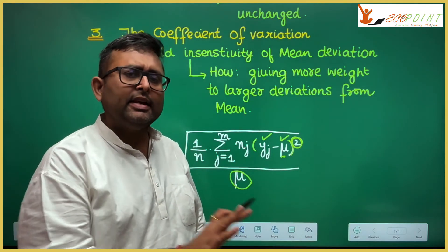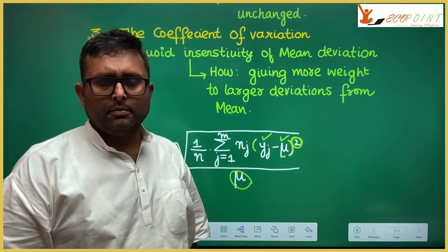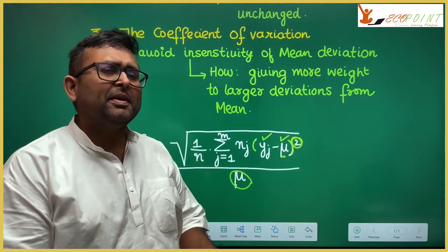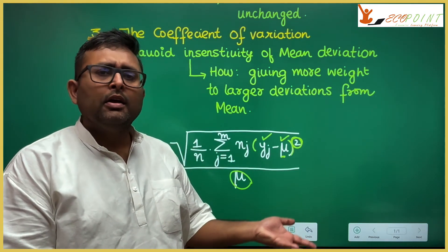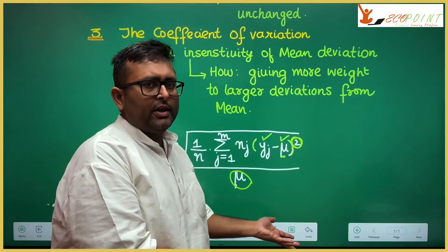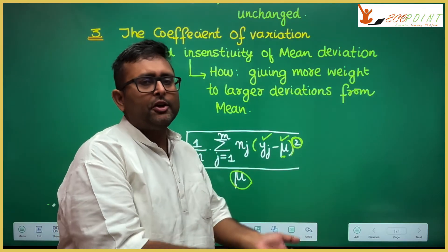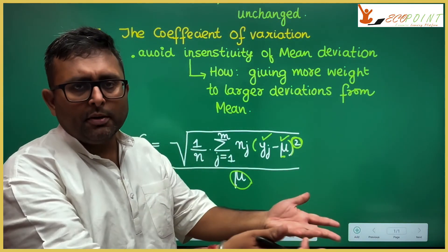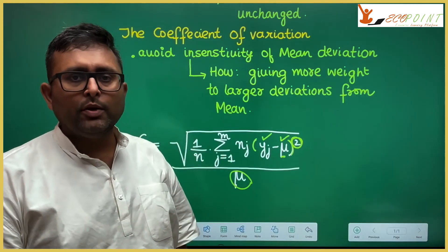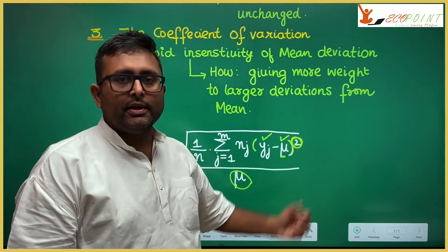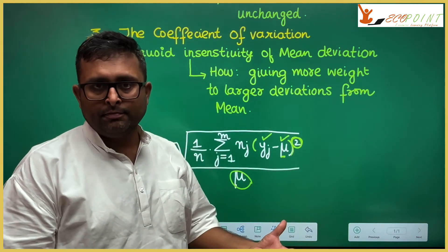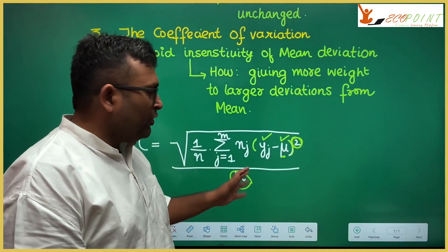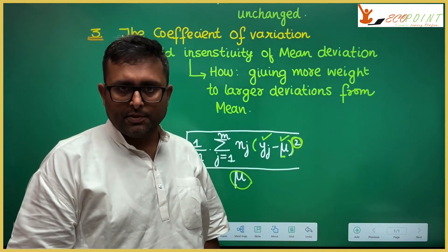In general, the coefficient of variation satisfies Dalton's principle. If you take the income of a poorer individual and transfer it to a richer individual, the squared term ensures the value increases, confirming that inequality rises. So the coefficient of variation satisfies Dalton's principle.